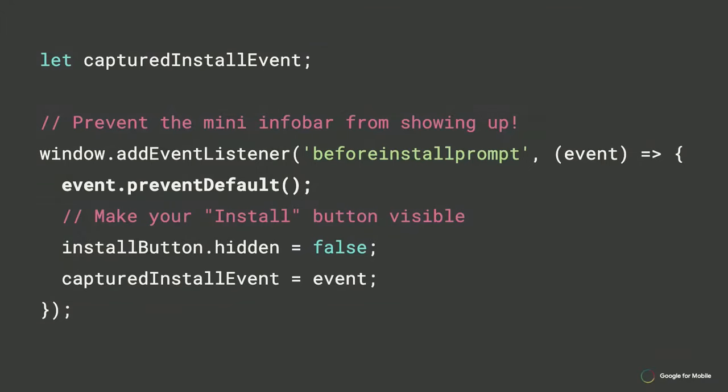To make the Mini Infobar disappear, when you're monitoring for the Before Install Prompt event — which tells you the web app is ready to be installed — calling event.preventDefault() will prevent that Mini Infobar from appearing. Just keep in mind: if you haven't implemented any other pattern for the user to understand install is available, you will get zero installs after calling preventDefault. Make sure you've provided an alternative way in your web UI for the user to install.